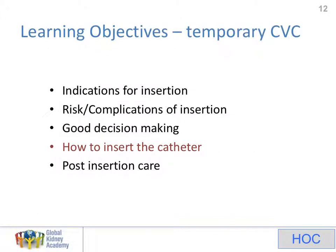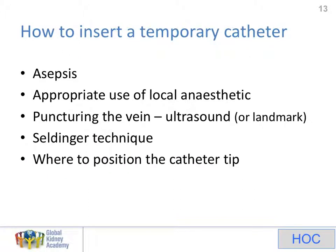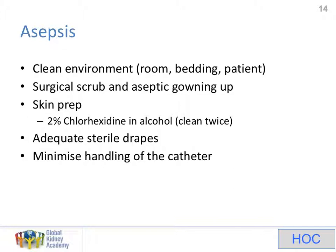Let's move on now to how to insert the catheter. I split this topic up into five subsections: I'm going to talk about asepsis, the use of local anaesthetic, actually how to puncture the vein — covering both the ultrasound technique and the landmark technique — we'll then look at the Seldinger part, which is the passage of the wire and then the dilators and catheter over the wire, and finally, where you want the tip of this catheter to end up.